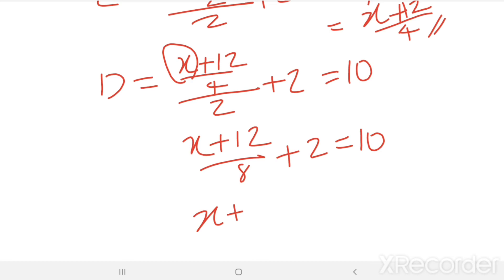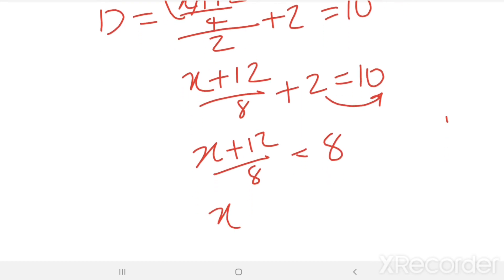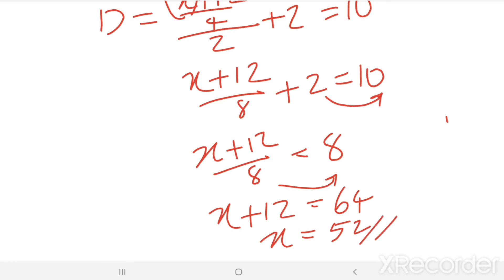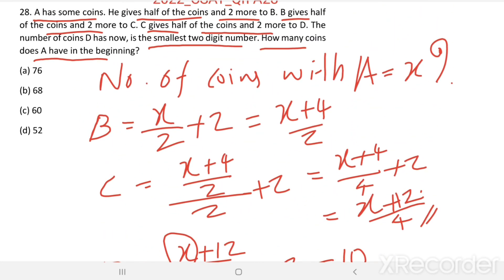Then (X + 12) / 8 = 10 − 2 = 8. Then X + 12 = 8 × 8 = 64. Therefore X = 64 − 12 = 52. The number of coins with A in the beginning is 52. Option D is the right answer.